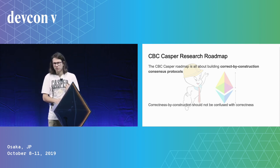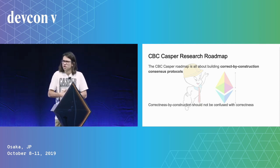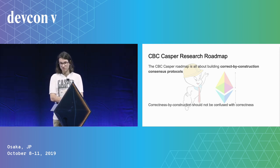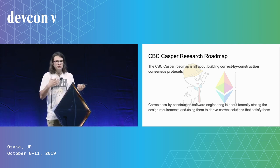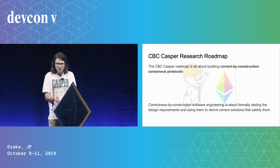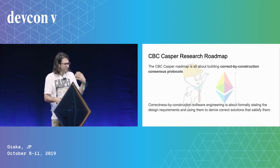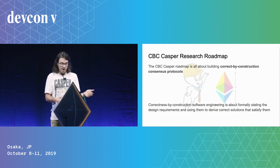It's a research roadmap — all about building correct-by-construction consensus protocols. Correct-by-construction engineering is about designing systems in a way that is guaranteed by the process itself to be correct. It's about the process used to develop these protocols. We formally state the design requirements and abstractly state protocol statements, then refine them in order to derive solutions from the problem statements that are guaranteed by derivation to be correct.